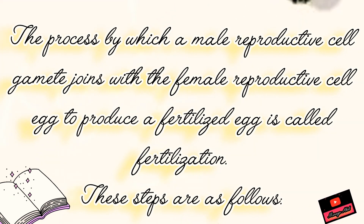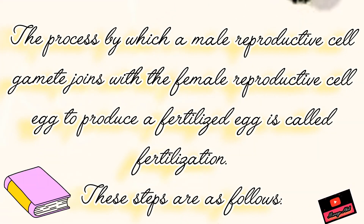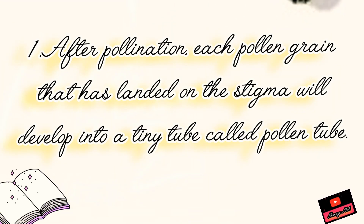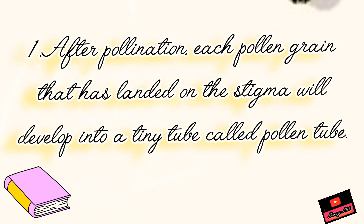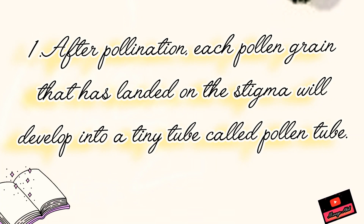These steps are as follows. First step: after pollination, each pollen grain that has landed on the stigma will develop into a tiny tube called a pollen tube.